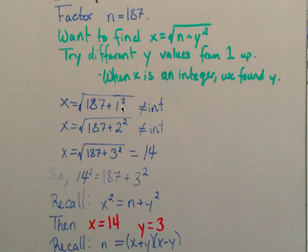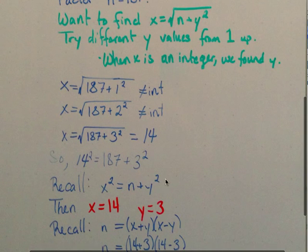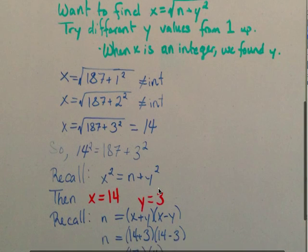So we try the next y: y equals 2. We take the square root of 187 plus 2 squared, which is also not an integer. But when we use 3 as our y, we get 14 — an integer. So therefore 14 squared equals 187 plus 3 squared. Comparing that to x squared equals n plus y squared, we can see that x equals 14 and y equals 3.